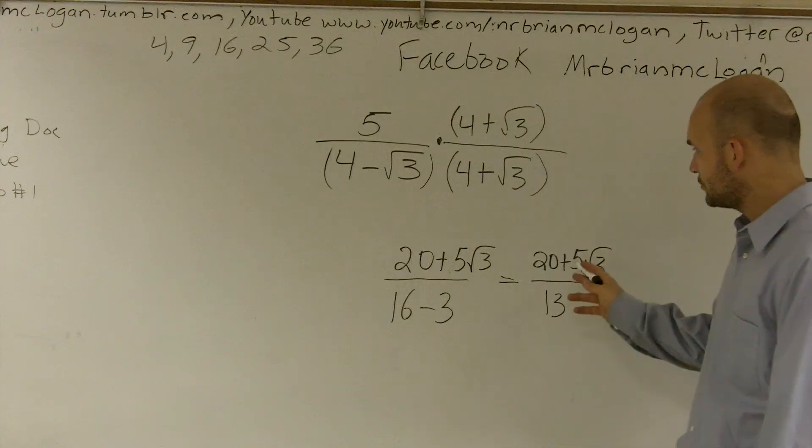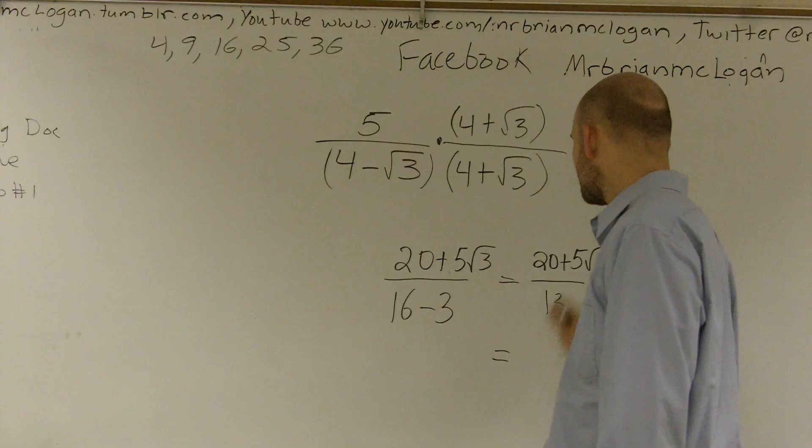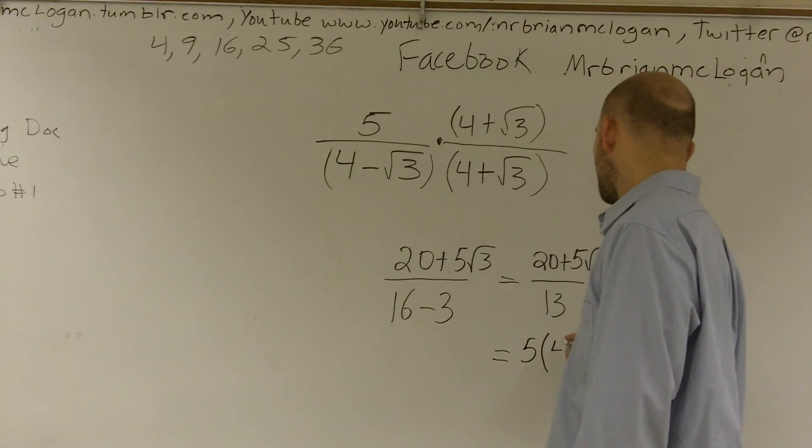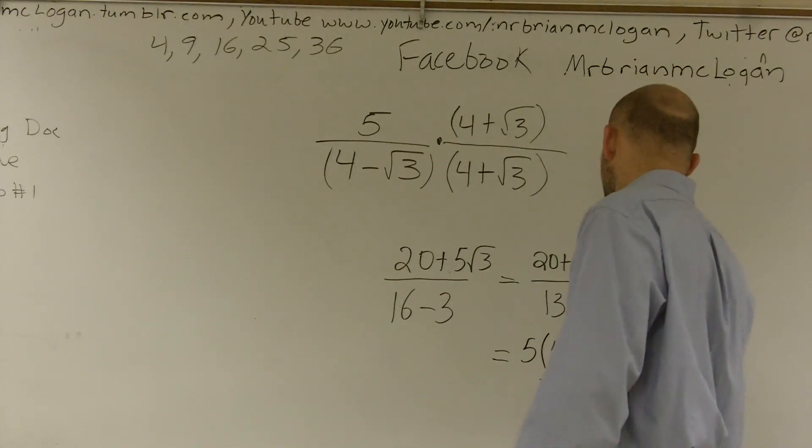You could factor out a 5 from the top if you wanted to reduce this a little bit more. You could have 5 times (4 plus radical 3) over 13.